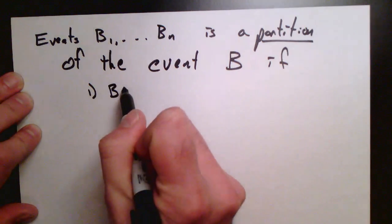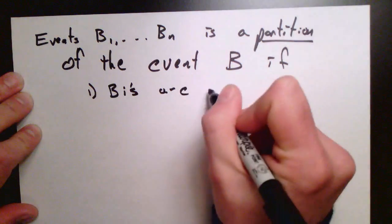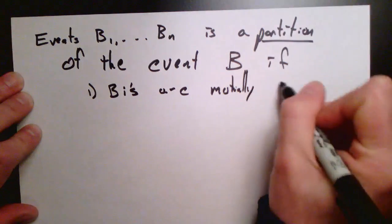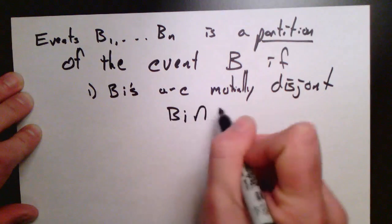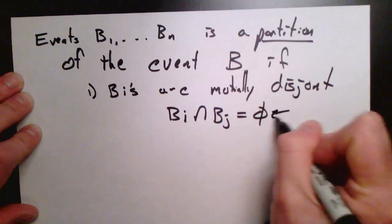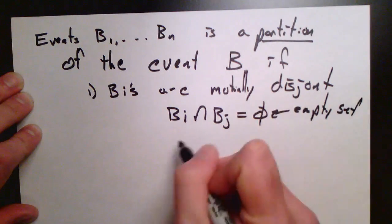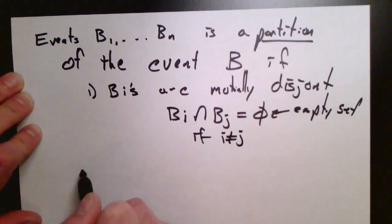One, the bi's, the events which will be our partition, they are all mutually disjoint. That is to say, their intersection is zero unless they're the same event. That's the first thing. They have to be mutually disjoint.